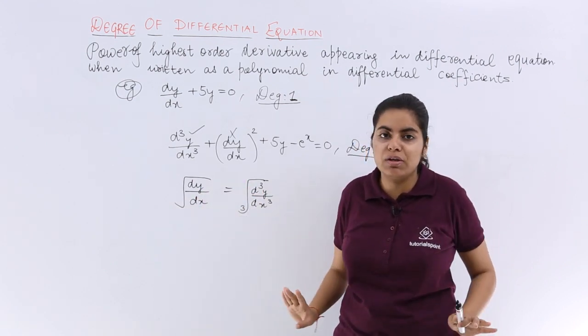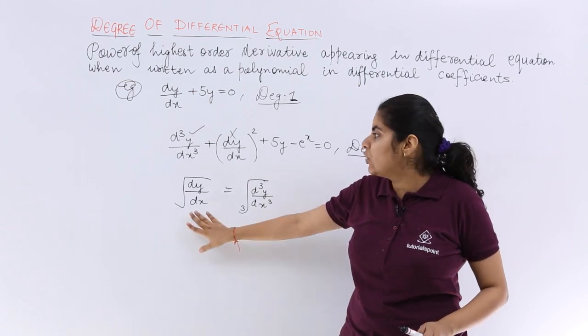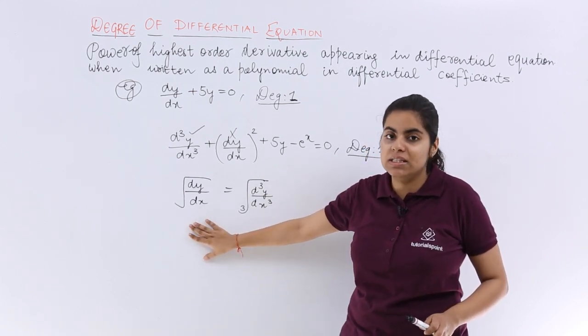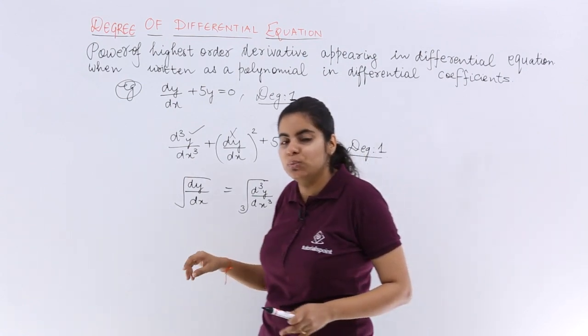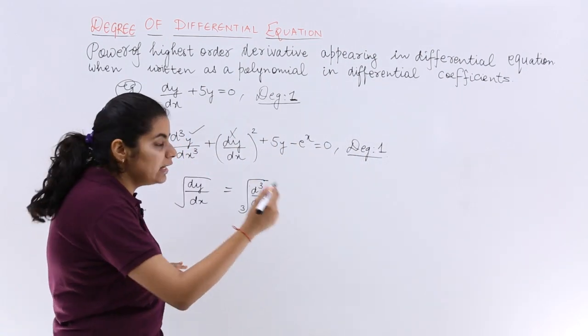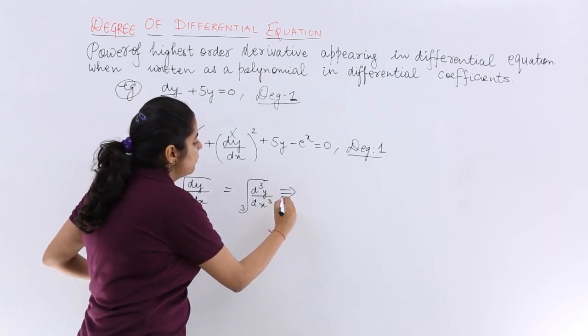Radicals and all should be free from. So I cannot directly find out what is the degree of this differential equation until and unless this is free from the square root and cube root. So in order to solve this, let me see what should be the next step.